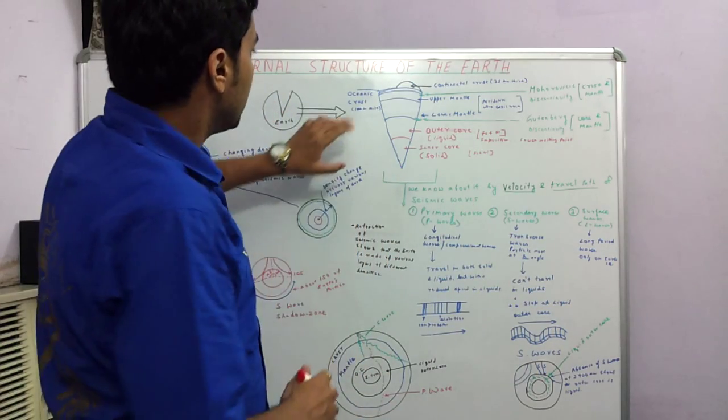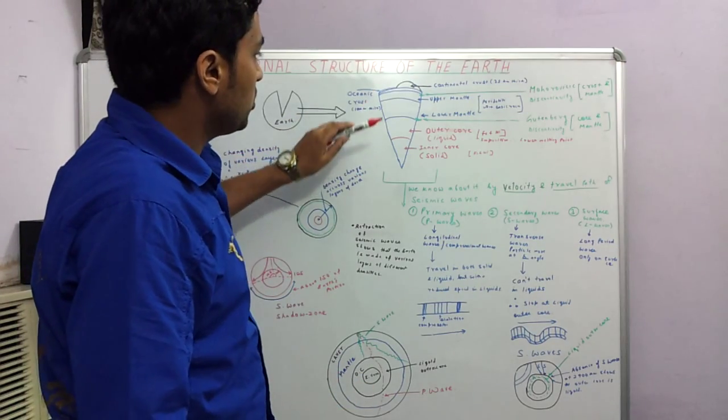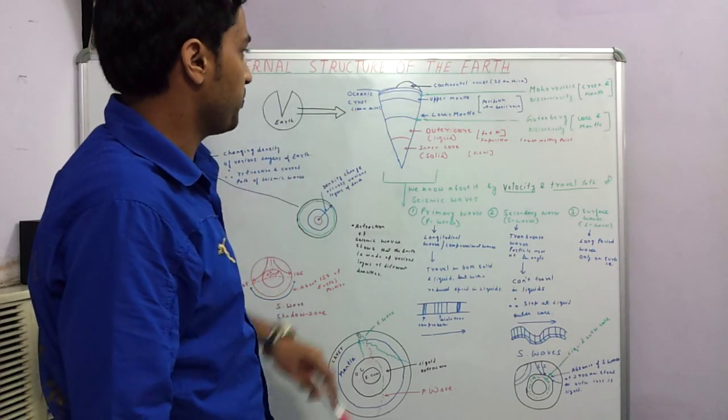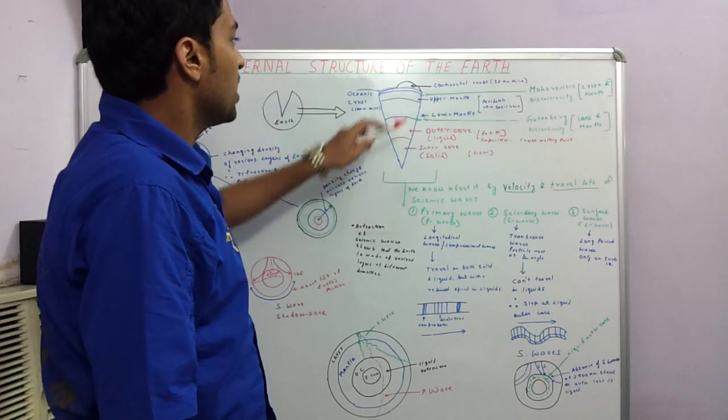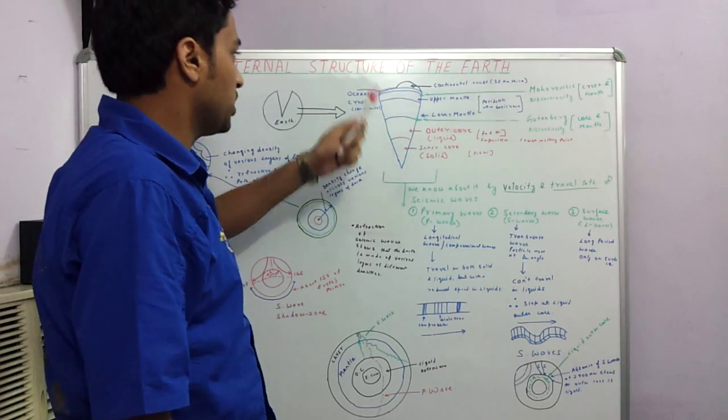We can broadly see that the earth's internal structure can be subdivided into three basic parts: the crust, the mantle, and the core. These can be further subdivided. The crust can be divided into the continental crust and the oceanic crust.